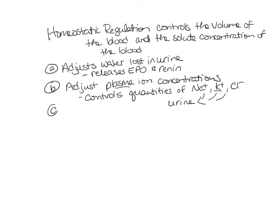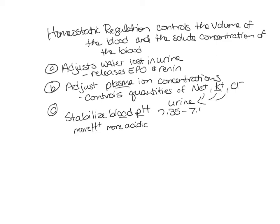Next, the kidneys stabilize the blood pH. Blood pH in large part is controlled by the number of hydrogen ions. If there are more hydrogen ions, then the blood pH becomes more acidic. The normal blood pH should be between 7.35 and 7.45. If there are more hydrogen ions and the blood becomes more acidic, then the kidneys can excrete hydrogen ions, making the blood less acidic and bringing it back into the normal range.